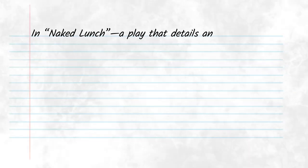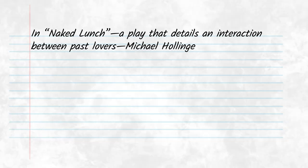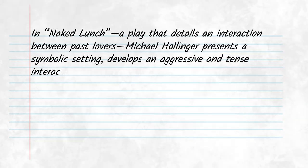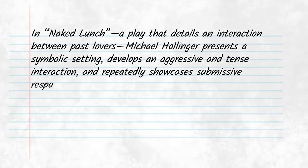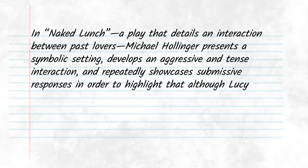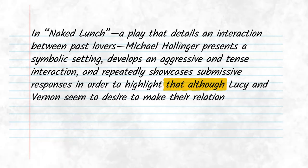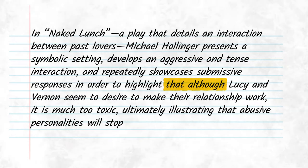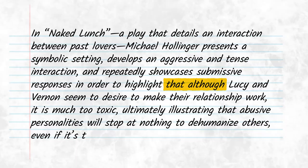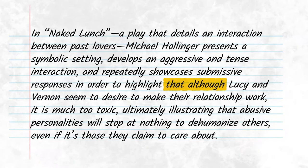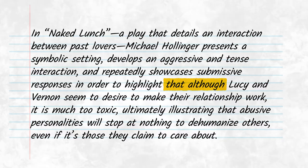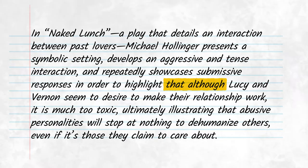In Naked Lunch, a play that details an interaction between past lovers, Michael Hollinger presents a symbolic setting, develops an aggressive and tense interaction, and repeatedly showcases submissive responses in order to highlight that although Lucy and Vernon seem to desire to make their relationship work, it's much too toxic, ultimately illustrating that an abusive person and an abusive personality will stop at nothing to dehumanize another, even if it's someone he or she claims to care about.